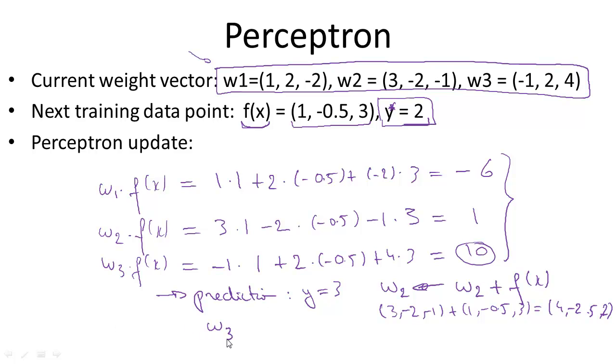The update for w3 goes in the opposite direction. w3 was the one winning this current prediction stage. We don't want it to have that high an inner product with f(x).